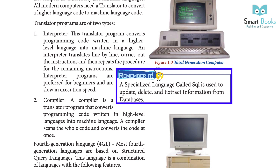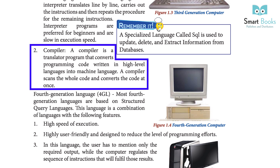A specialized language called SQL is used to update, delete, and extract information from a database. A compiler is a translator program that converts programming code written in a high level language into machine language. Unlike an interpreter, a compiler scans the whole code and converts it all at once.